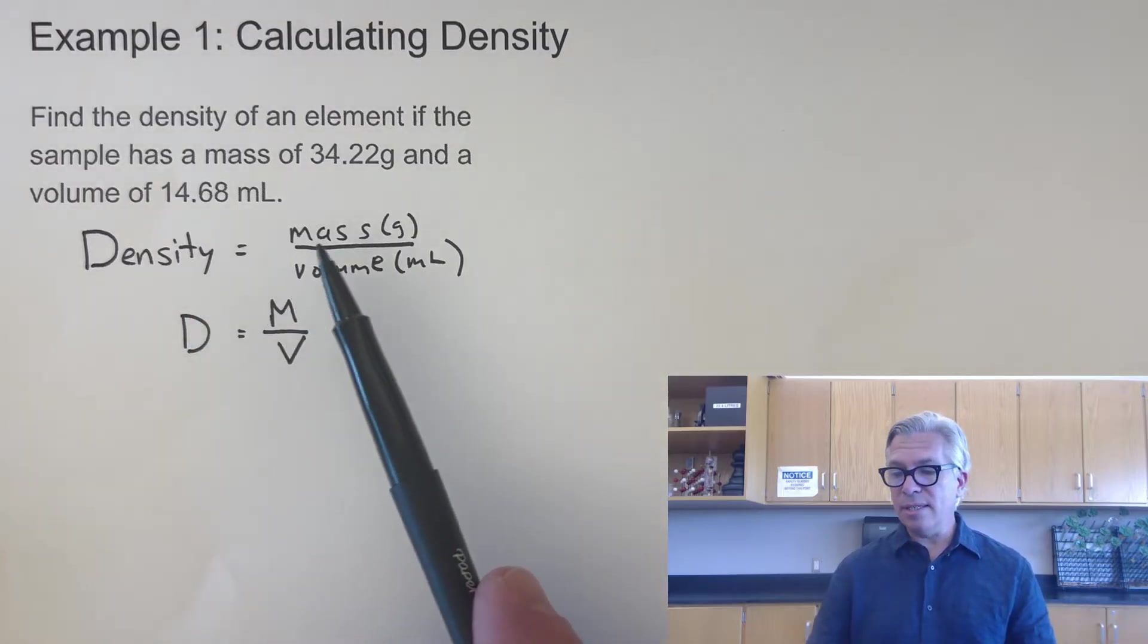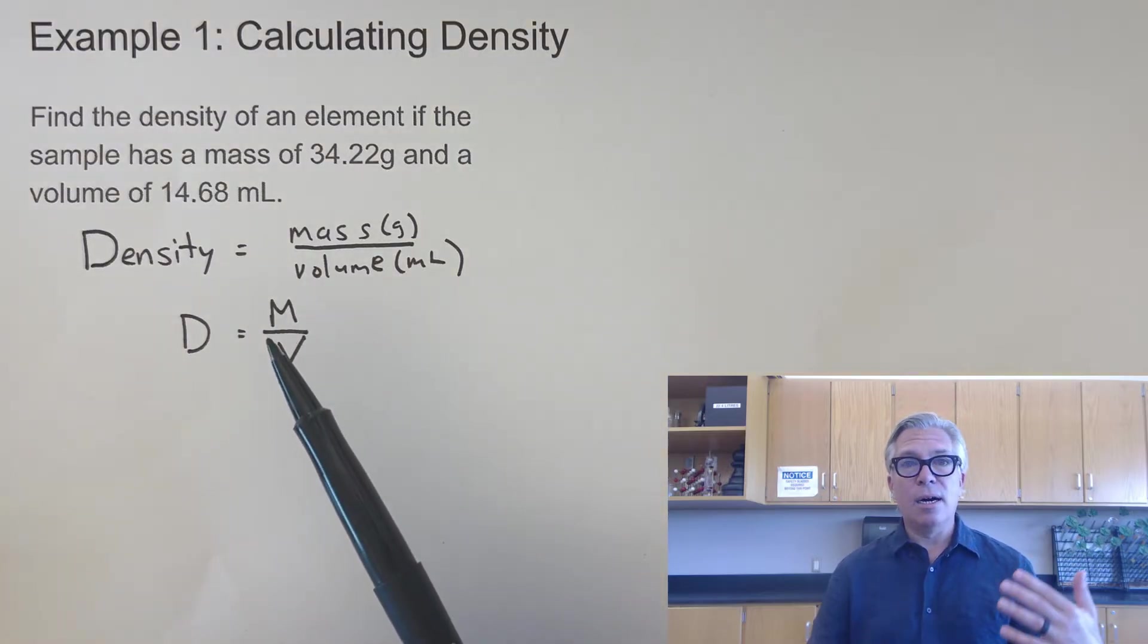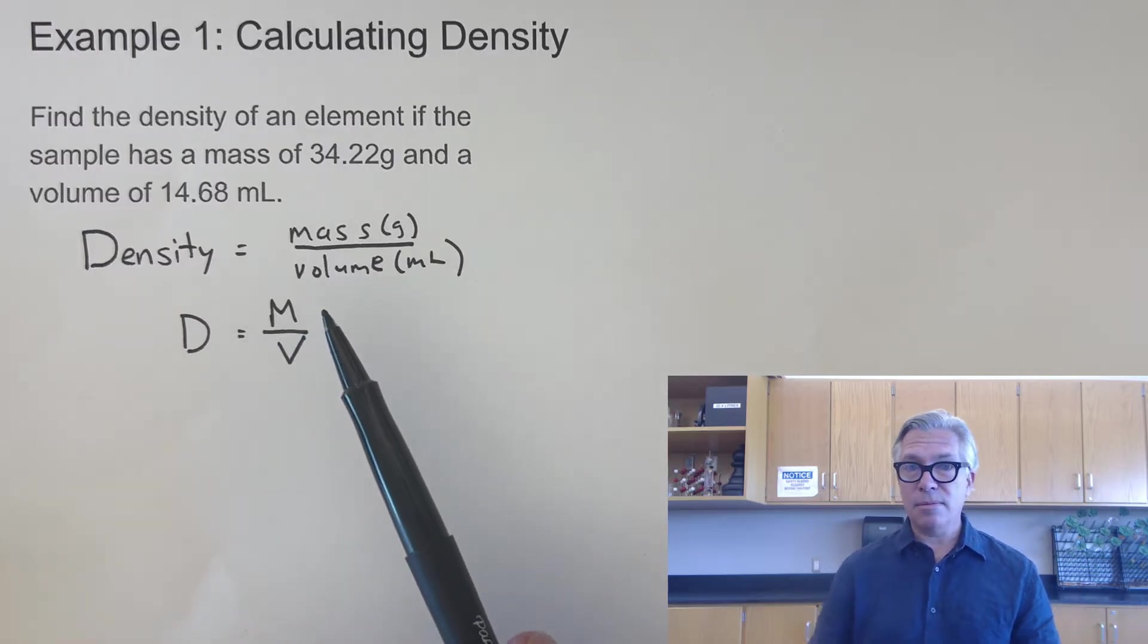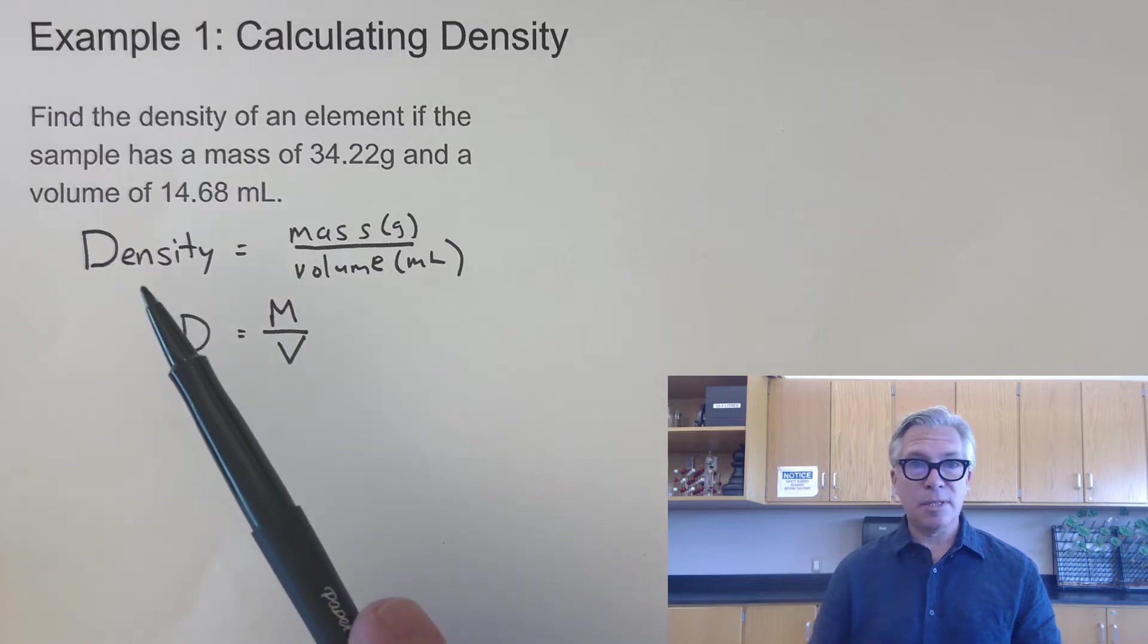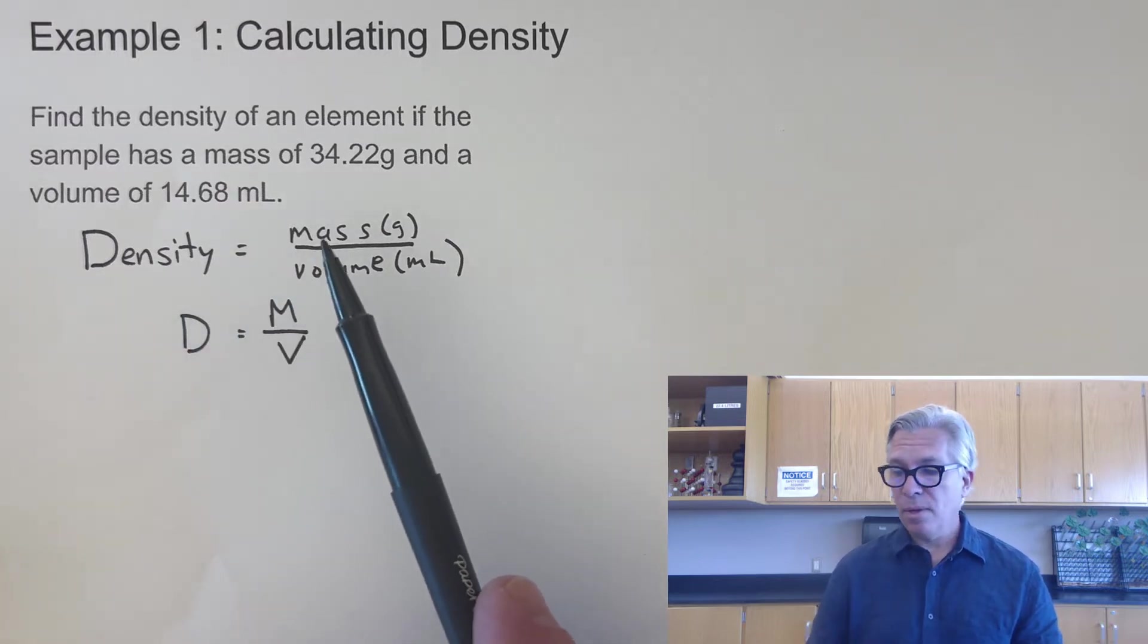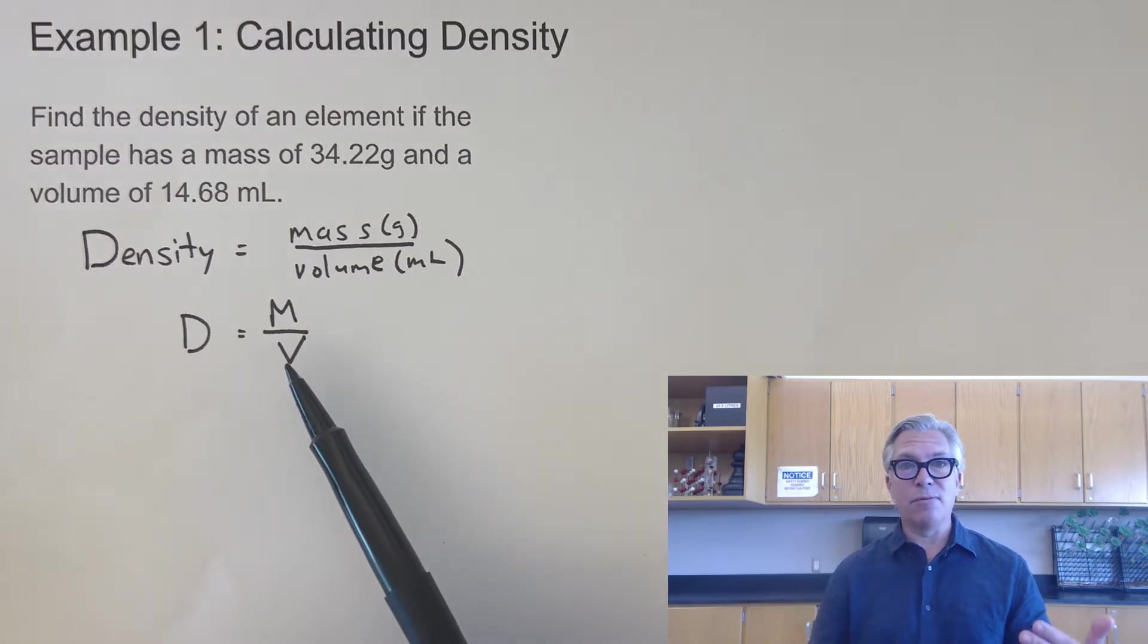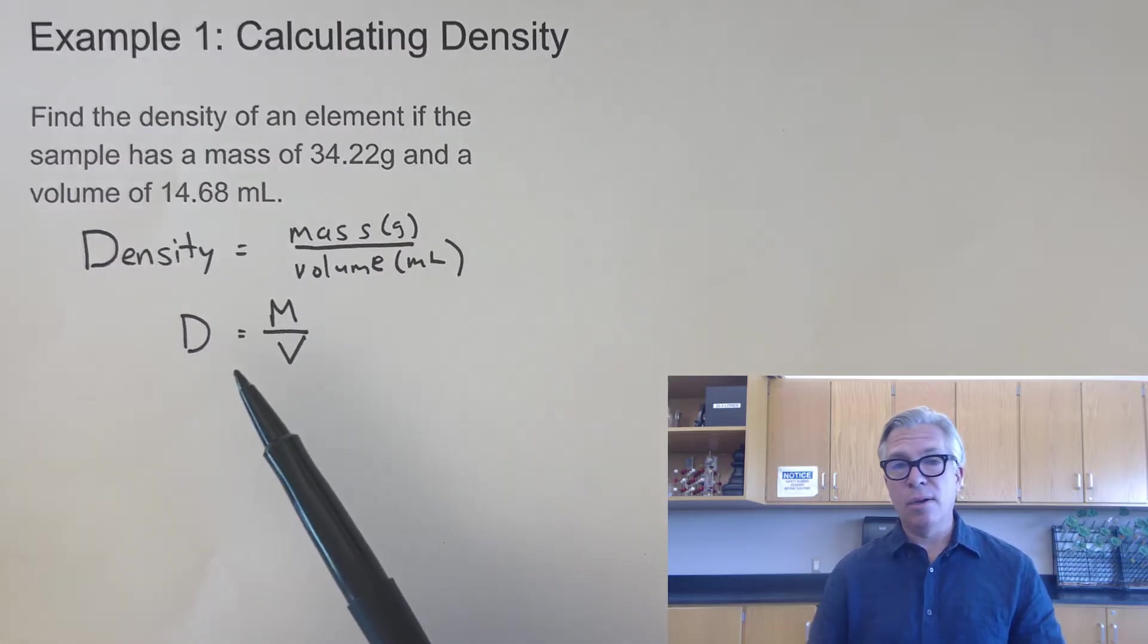Now, you might already know that density equals mass over volume, or d equals m over v. I've already made a couple of videos about factors that affect density and the concept of density, but in this video, we're just doing some calculations. Specifically, we're going to calculate for density, we're going to calculate for mass, and then we're going to do the trickiest one, calculating for volume. And if all goes according to plan, in a few minutes, you'll know how to do all three, while minimizing common errors along the way.